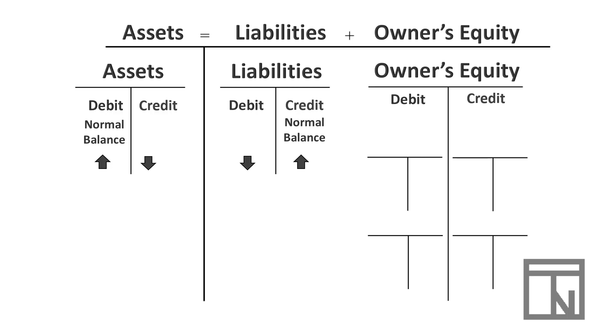Owner's equity is on the right side, just like liabilities. So they would also increase on the credit side and decrease on the debit side, with credit being their normal balance side.